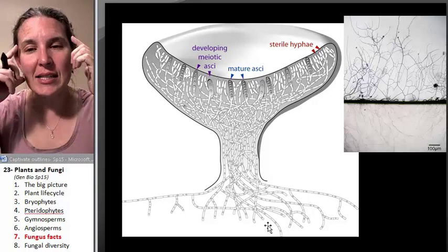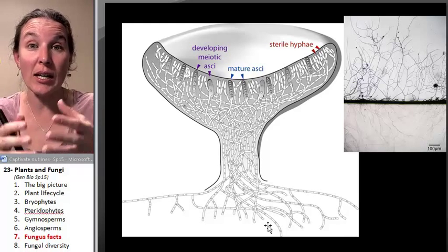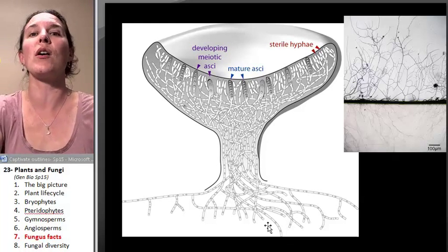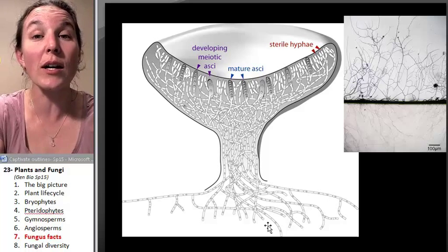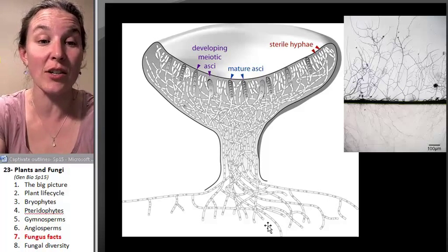So it's counterintuitive that the fruiting body is not the entire bulk of the organism itself. Most of the organism is actually underground.